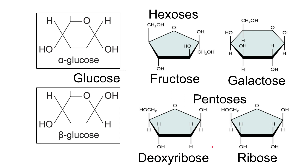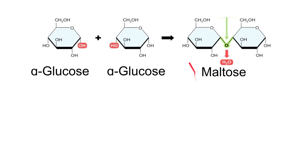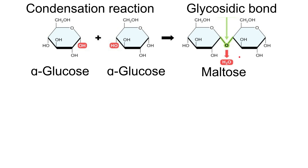Now let's talk about bonding. Here we have two alpha glucose molecules bonded together. The hydroxyl group on carbon one reacts with the hydroxyl group on carbon four. Where these two react, a water molecule is lost, and the remaining oxygen bonds together carbon one and carbon four. Because a water molecule is lost, this is a condensation reaction, and the bond left behind is known as a glycosidic bond.